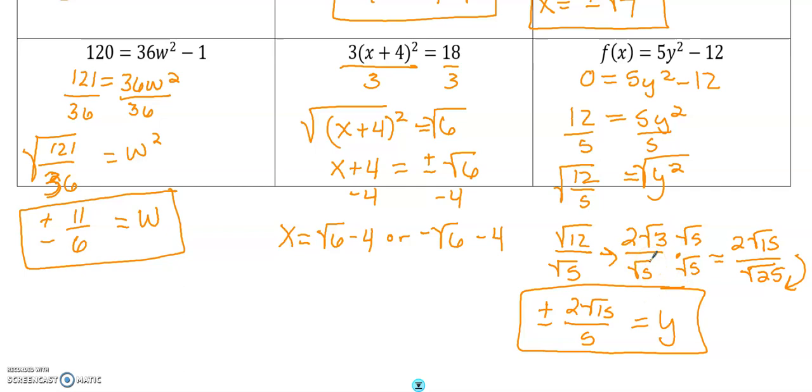I simplified the square root of 12 to be 2√3. I'm going to have to multiply it by that denominator top and bottom to rationalize. Multiply by √5 over √5.